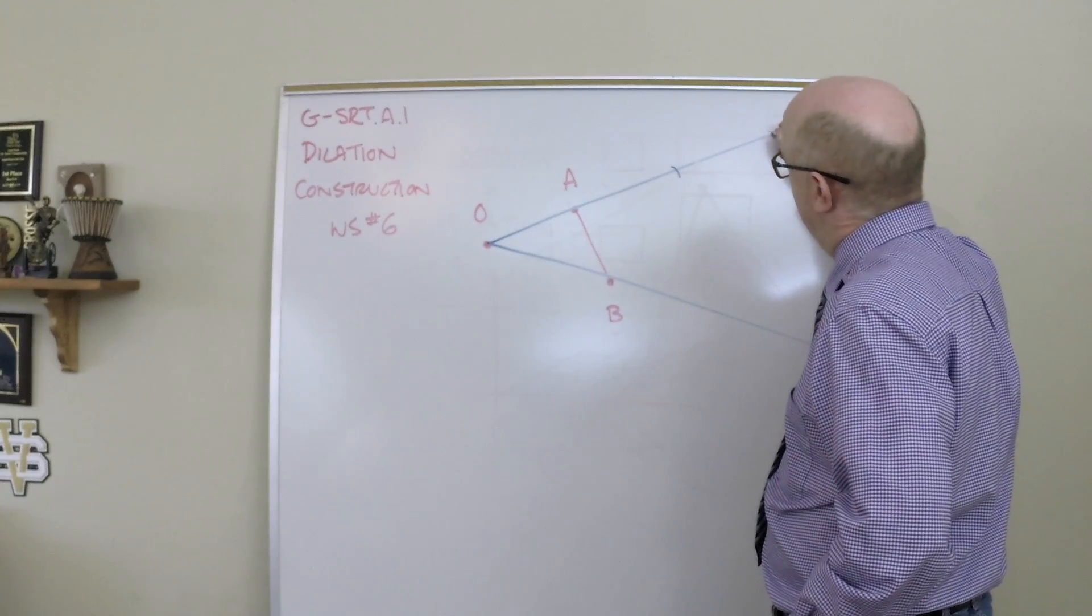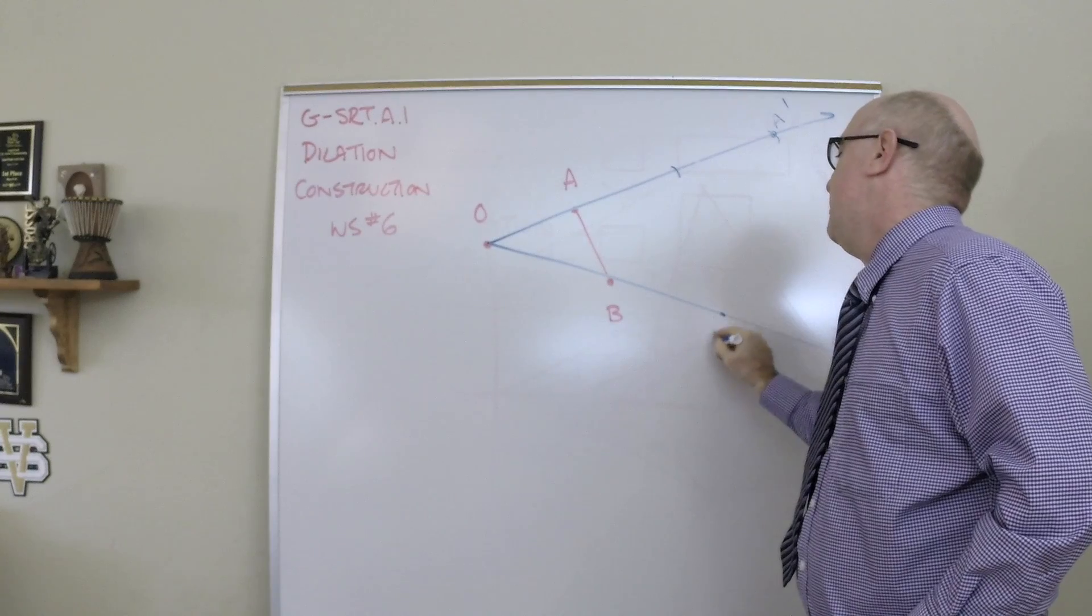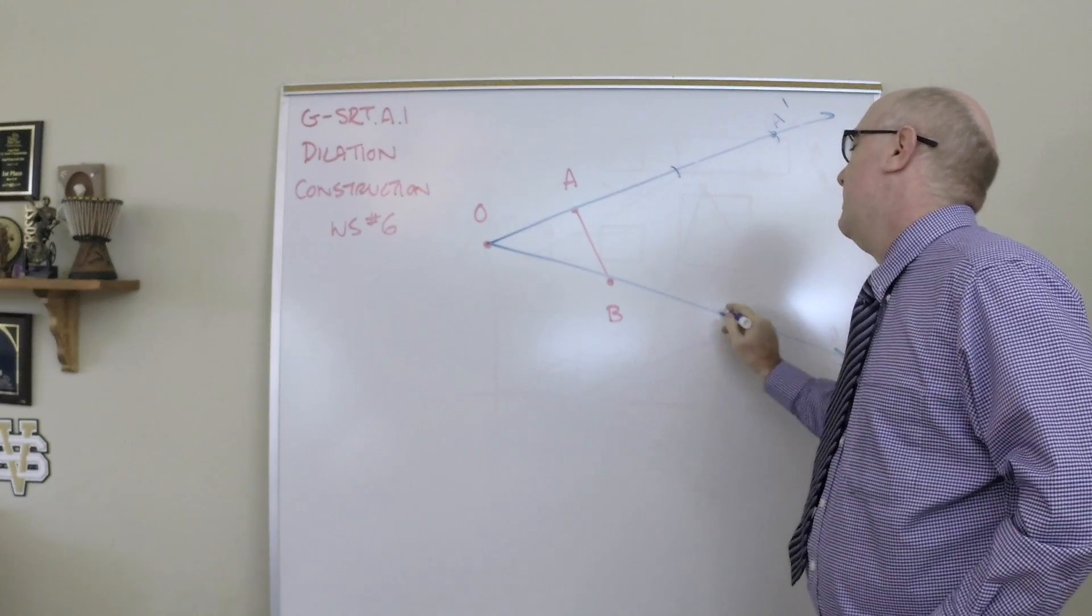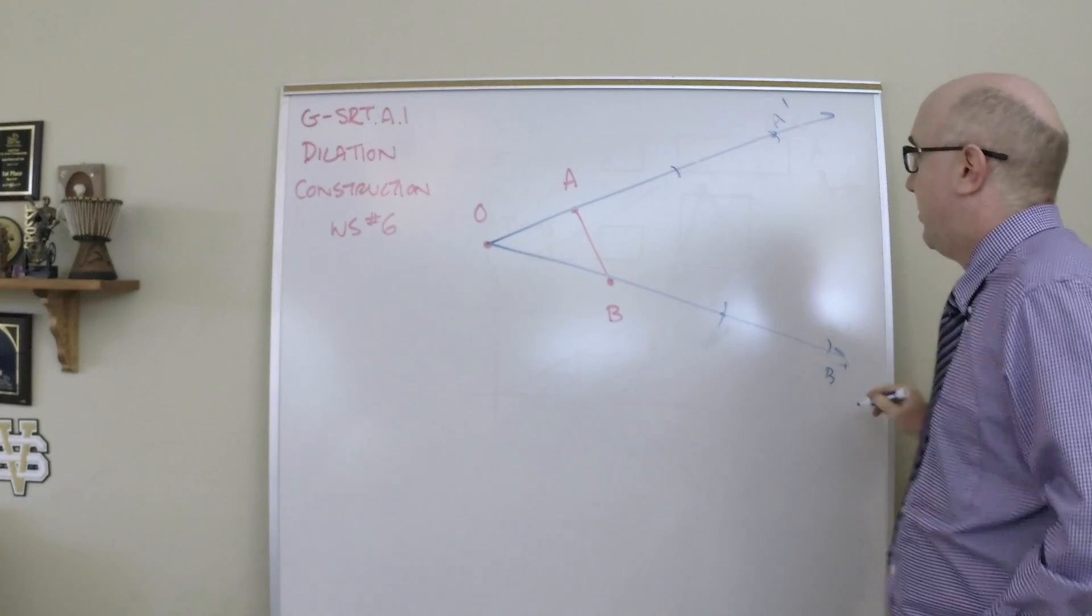You do the same thing with the measurement here to find the initial double, and then the triple would be out here, like B prime.